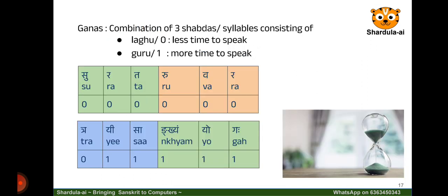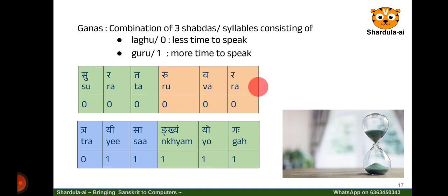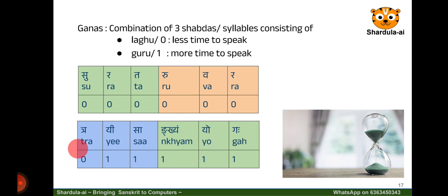To understand this composition and the mathematics behind it, we need to understand a concept called Ganas, which is a combination of three shabdas or syllables consisting of laghu and guru. Laghu is a word which takes less time to speak, and guru is a word which takes more time to speak. For example, if we take the word surataruvara, we will see that each of these shabdas takes less time to speak, so we would name it as 00000.